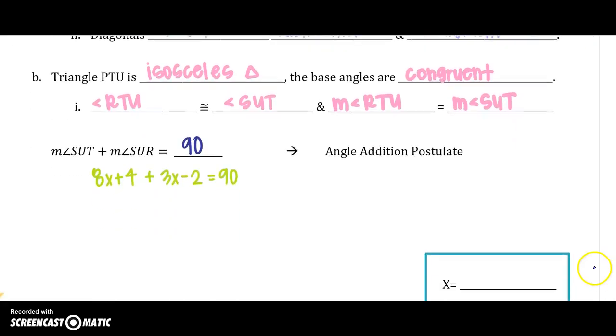So I'm going to go ahead and solve. 8X plus 3X gives me 11X. 4 minus 2 gives me plus 2. Remember, I'm on the same side, so I do not change its sign. I'm going to subtract 2 from both sides. I get 11X equals 88.